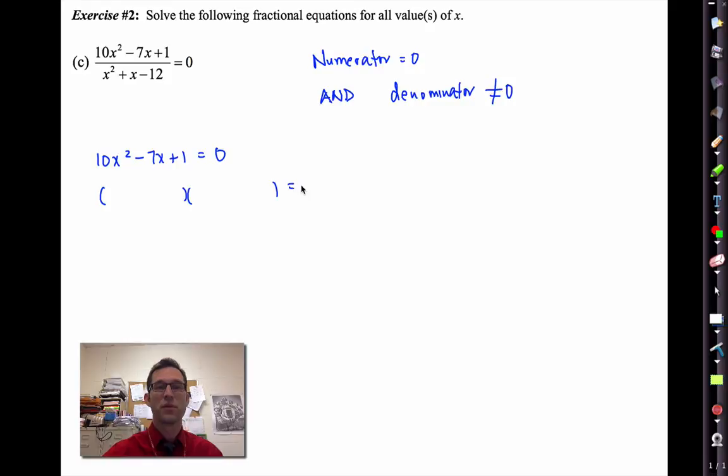If the denominator is equal to 0, we can't really do much. So what do we have here? Let's try a 5x and a 2x, and let's try a negative 1 and a negative 1. Let's see: negative 2x, negative 5x, that's negative 7x. Excellent. We'll get x equals 1 fifth and x equals 1 half.